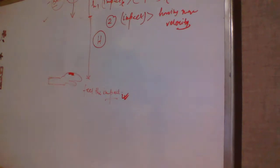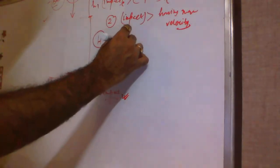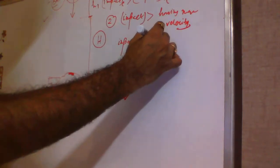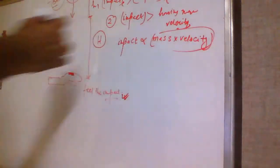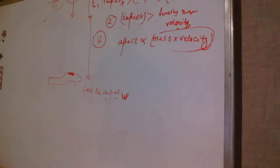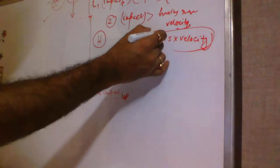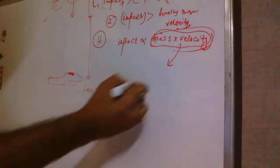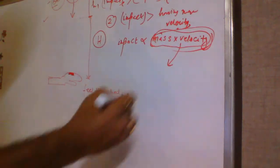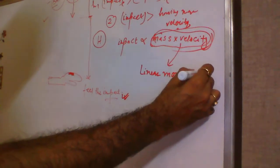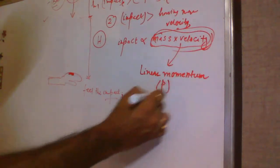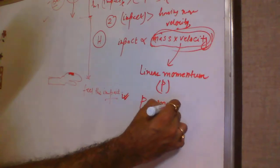So the impact is proportional to mass as well as velocity. The combined effect of mass and velocity of any object — this physical quantity is termed as linear momentum. Its symbol is small p, so p is equal to m into v.